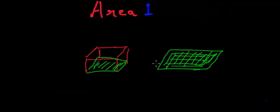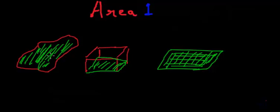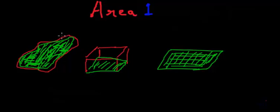Now suppose you have a carpet which you have spread over — the shaded portion is the area of this carpet. It is the space occupied by this carpet, and hence it is called the area of the carpet. These are regular shapes, but suppose you have something very irregular like this — the space occupied by this object is the shaded portion, which is the area of this object, because it is occupying this much space on the plane surface.